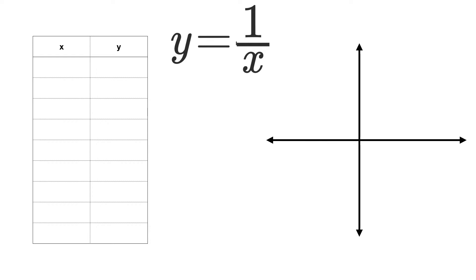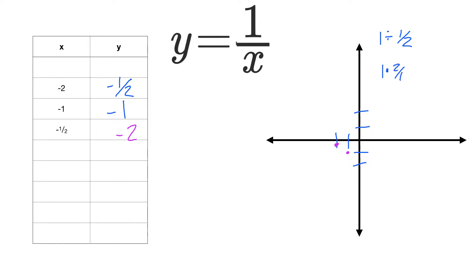We have x and y values — I'll give you an x and we'll figure out the y. If I plug in negative 2 into 1 over x, I get negative one-half. At negative 1, it would be negative 1. And at negative one-half, it would be negative 2. For those who don't remember why: 1 divided by one-half is the same as 1 times 2 over 1, which is 2 — but negative, because the input was negative.